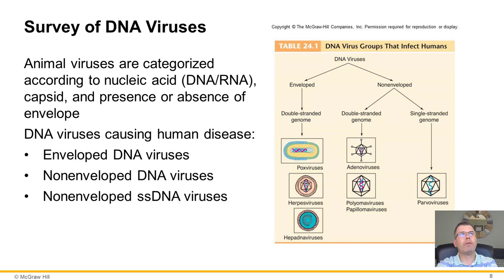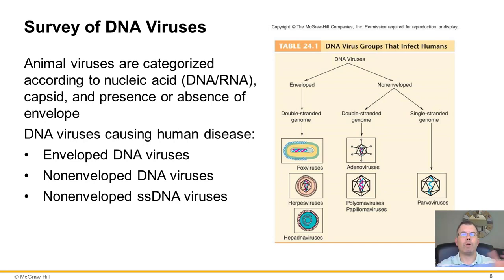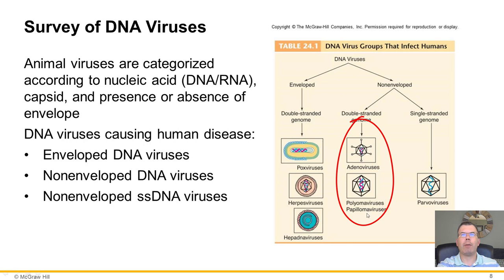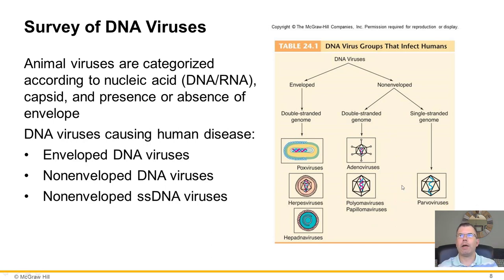Now let's talk about the different DNA viruses. We categorize between DNA versus RNA; today we're focusing on DNA. The major distinguishing characteristic is DNA versus RNA, then envelope versus non-envelope, then double-stranded versus single-stranded. The envelope DNA viruses include pox virus, herpes virus, and hepatitis DNA viruses. Non-envelope DNA viruses include adenoviruses and papillomaviruses. The non-envelope single-stranded DNA virus is the parvovirus.